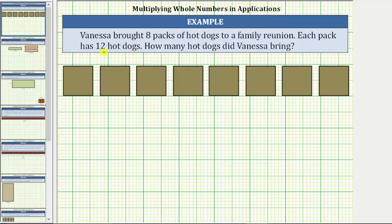In the first example, Vanessa brought eight packs of hot dogs to a family reunion. Each pack has 12 hot dogs. How many hot dogs did Vanessa bring?